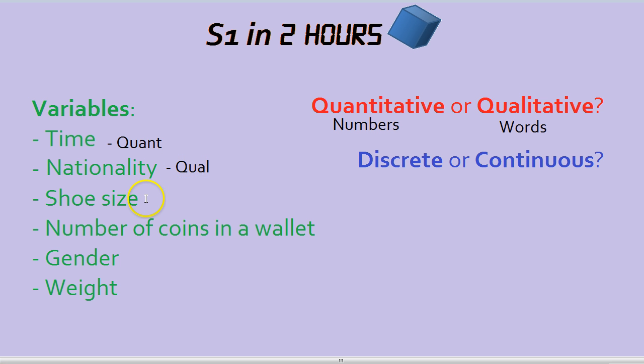Shoe size, again, is numbers, quantitative, as is the number of coins in a wallet. The giveaway is the phrase number.